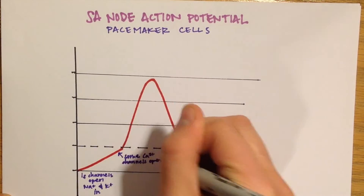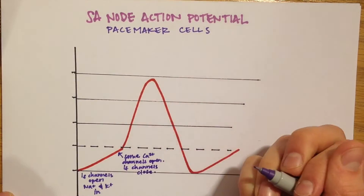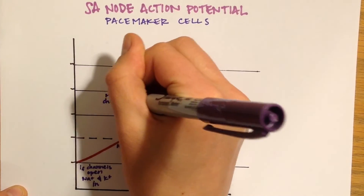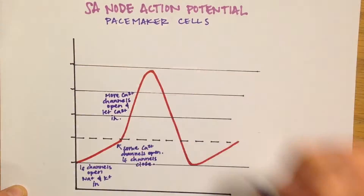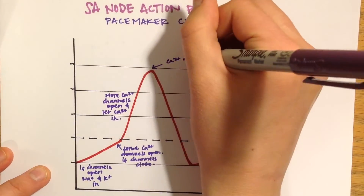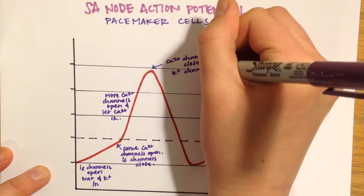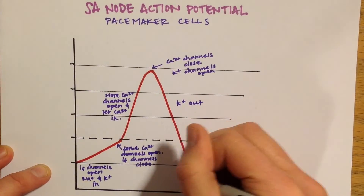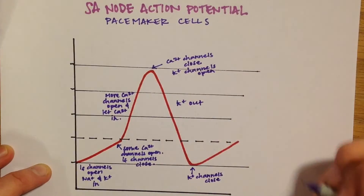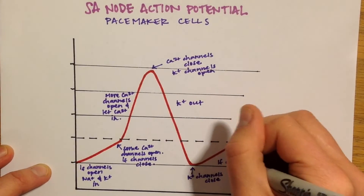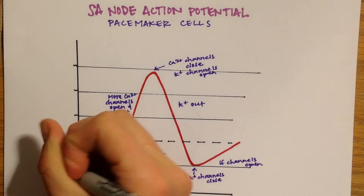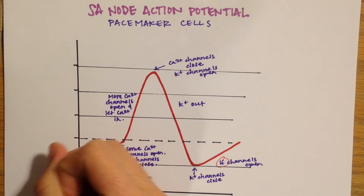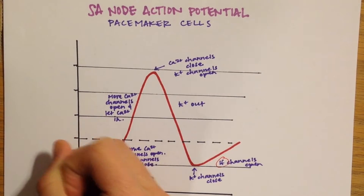An influx of sodium enters the cell. Then some calcium channels open, and later more open to continue to depolarize the cell as calcium enters. The calcium channels close as the potassium channels open, and the exiting of potassium causes the cell to repolarize. After the cell is hyperpolarized, the potassium channels close and the funny channels open again. These funny channels are what allow the cells to be auto-rhythmic rather than waiting for an outside signal to reach threshold.